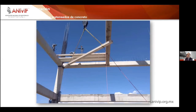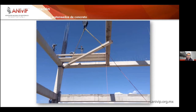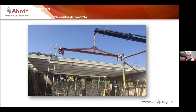Vemos ahí un claro ejemplo donde tenemos una doble altura y el montaje de una viga tubular, la cual no va a requerir ningún puntal. Ya se está colocando la bovedilla, se colocará la malla o algunos bastones y a colar. Nunca colocamos ni un solo puntal, mientras que en otros sistemas se requeriría apuntalamiento a doble altura.